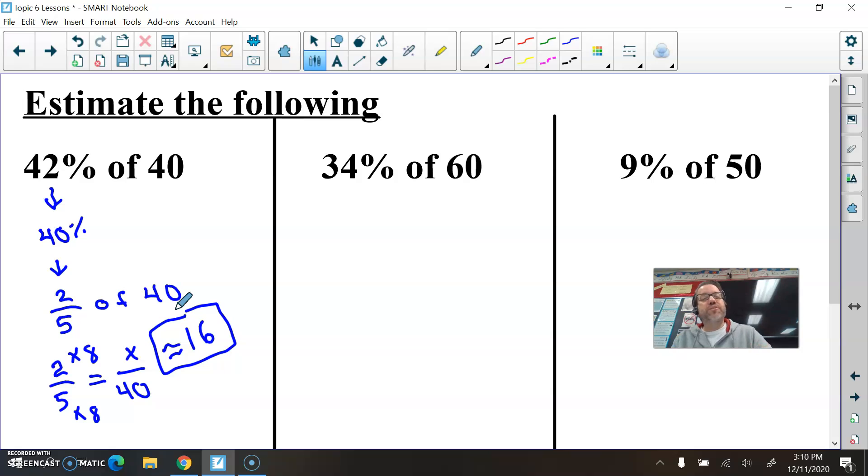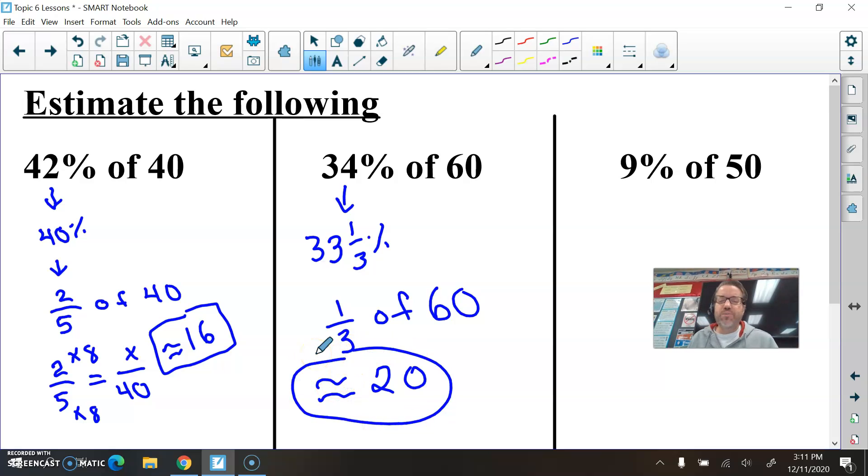Now, this next one, 34% of 60, this right here is really, really close to one-third. Remember, one-third is 33 and a third percent. See how close that is to 34%? So I'm going to estimate by finding one-third of 60, and you might be thinking, ooh, this one's actually pretty easy then. What's one-third of 60? Can you divide 60 by three? That's how you find one-third of something. It's 20. About 20. So I'm going to put that squiggly equal sign again. Do you need to use the squiggly equal sign? No, but it's kind of fun.